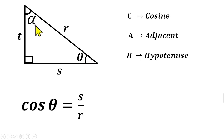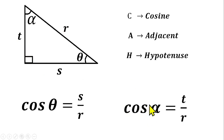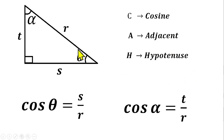What would be the cosine of angle alpha? That is adjacent of alpha over hypotenuse. Adjacent of angle alpha is side T and the hypotenuse is R, so cos alpha equals T over R. So: the relation between angle theta, its adjacent side, and the hypotenuse is cosine; and the relation between angle alpha, its adjacent side, and the hypotenuse is also cosine.